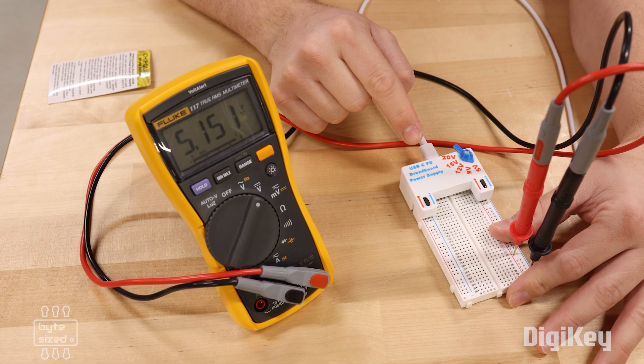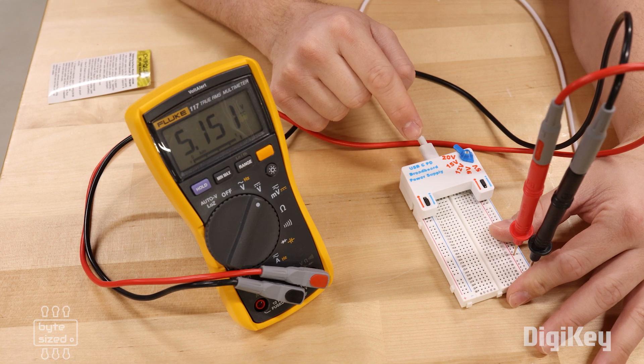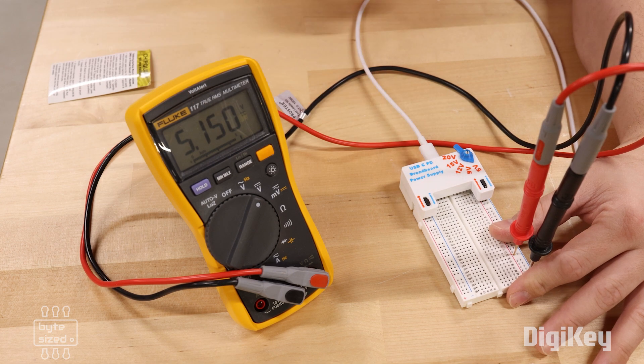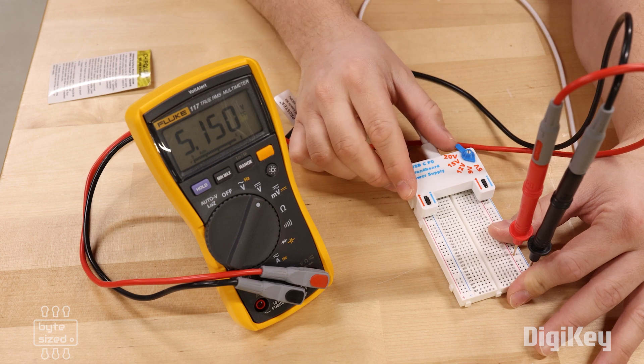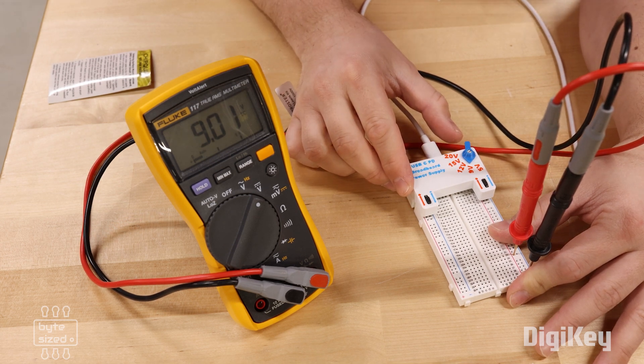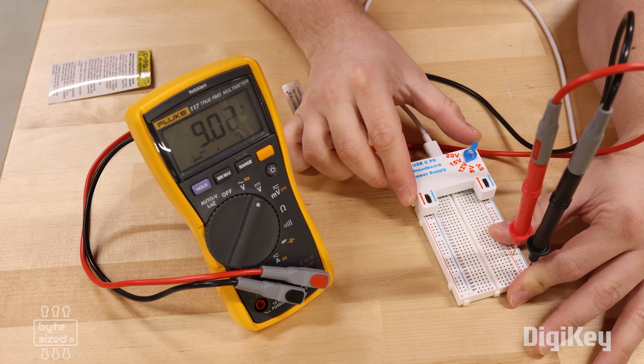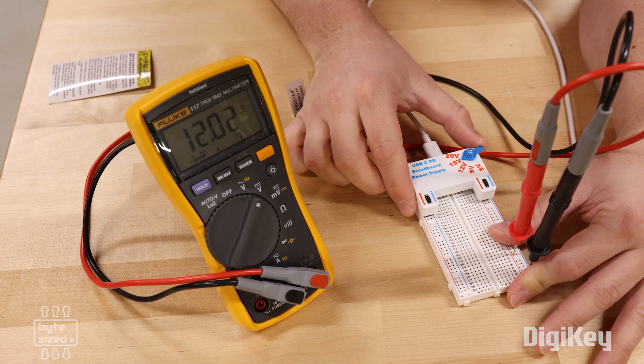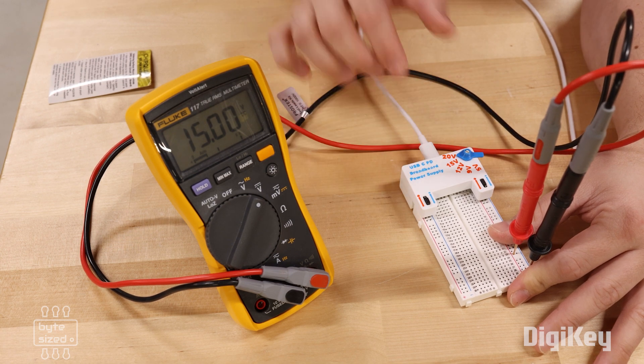I've plugged in a USB-C cable that is using a power delivery adapter, and you can see that I've got 5 volts on the rails here. If I change the selection to 9 volts, you can see that it adjusts to 9, and the same goes with 12, 15, and 20 volts.